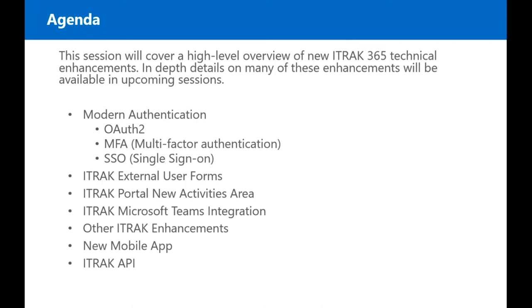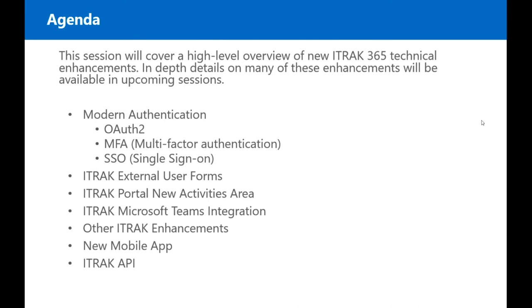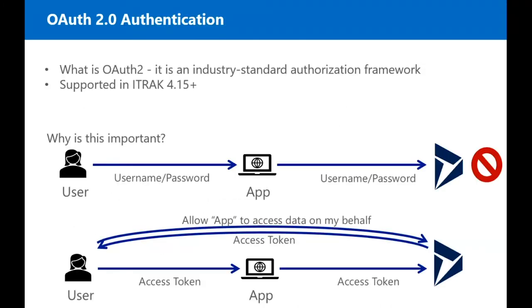The agenda for this session will cover a high level overview of new iTrack 365 technical enhancements. In-depth details on many of these enhancements will be available in upcoming sessions, so make sure to check those out. Some of the features we'll be covering today are: modern authentication including OAuth 2, multi-factor authentication, and single sign-on; iTrack external user forms; the new activities area in the iTrack portal; Microsoft Teams authentication with iTrack; miscellaneous iTrack enhancements; the new mobile app; and the iTrack API.